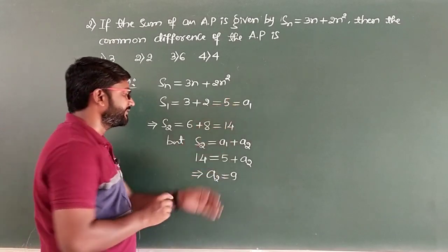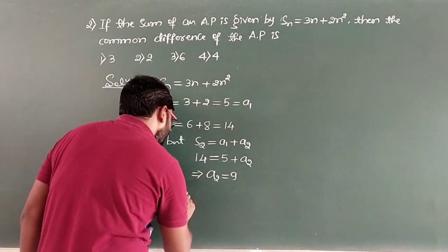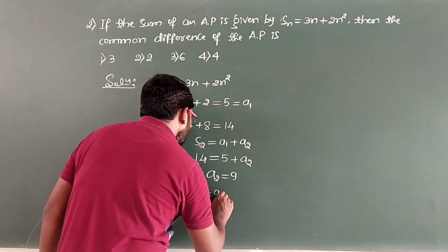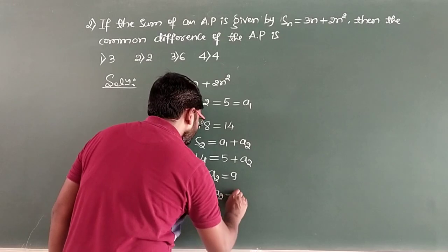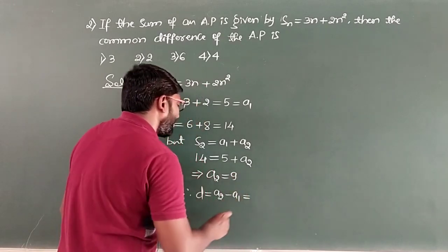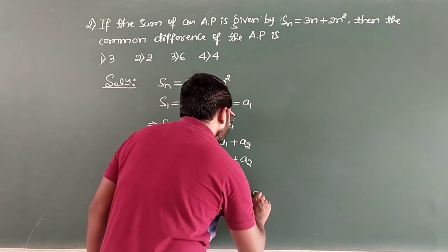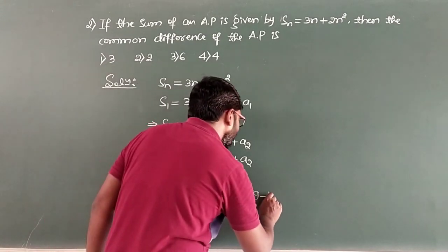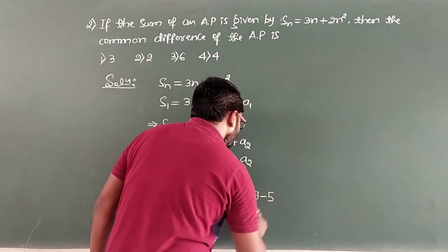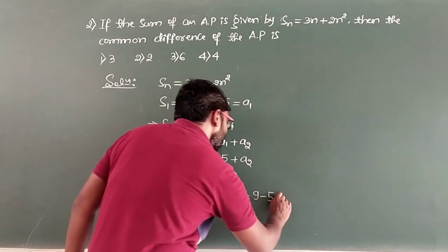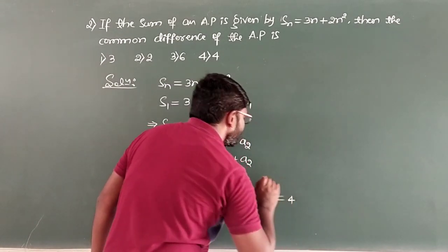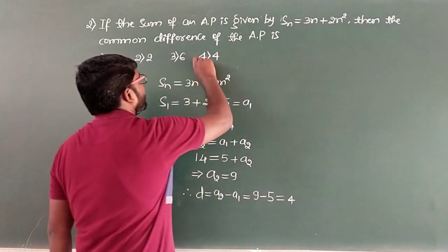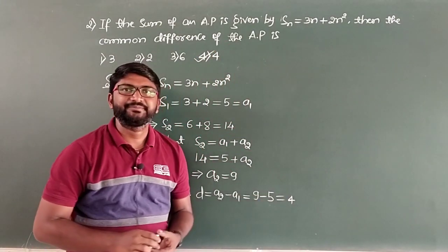With A1 and A2, we can find the common difference. D = A2 − A1 = 9 − 5 = 4. So the common difference of the AP is 4. Option 4 is the correct answer.